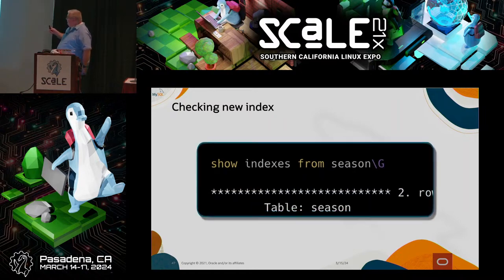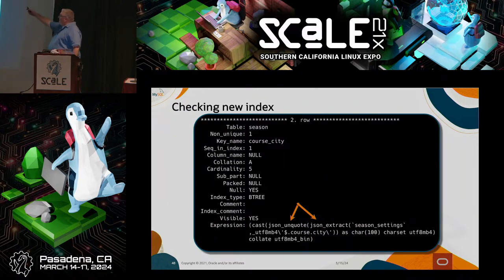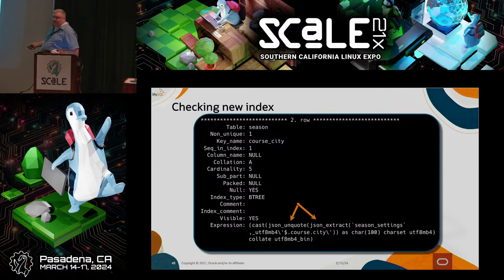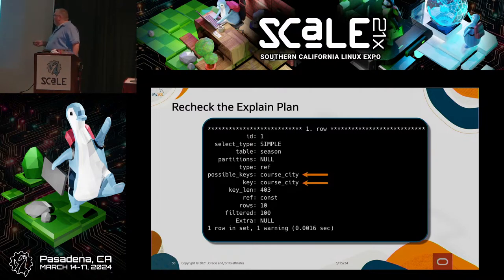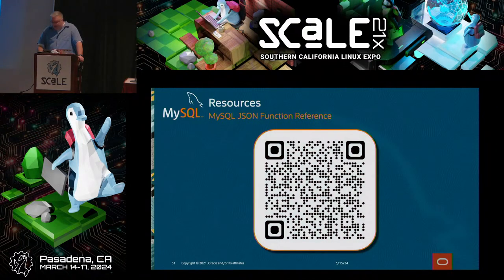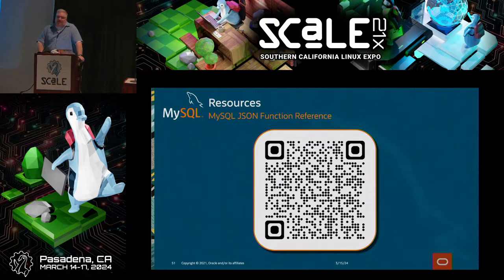After we create the index, we do SHOW INDEXES FROM season and we can now see the new index. We can see the expression showing it chains the path operator to JSON_UNQUOTE and JSON_EXTRACT. Going back and rechecking the EXPLAIN plan, it's now showing it's actually using the index we created. I could have done it using the document store API approach of creating a generated column first and then an index, but I wanted to show how you can do it in a single statement.